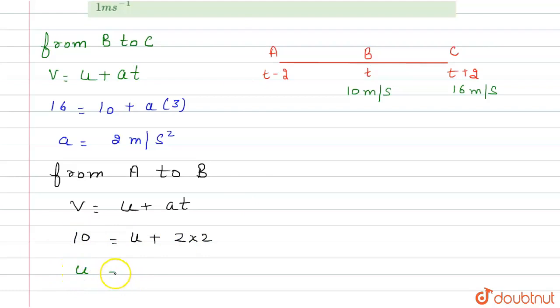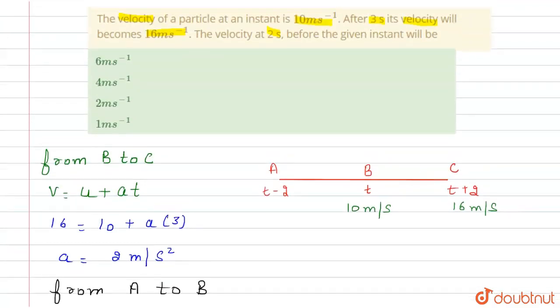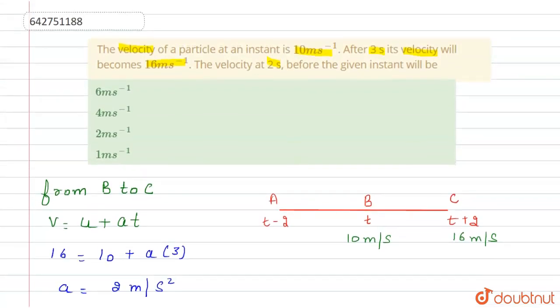So the answer is 6 meters per second. The velocity at 2 seconds before is 6 meters per second. The first option is the correct option. I hope you understand. Thank you.